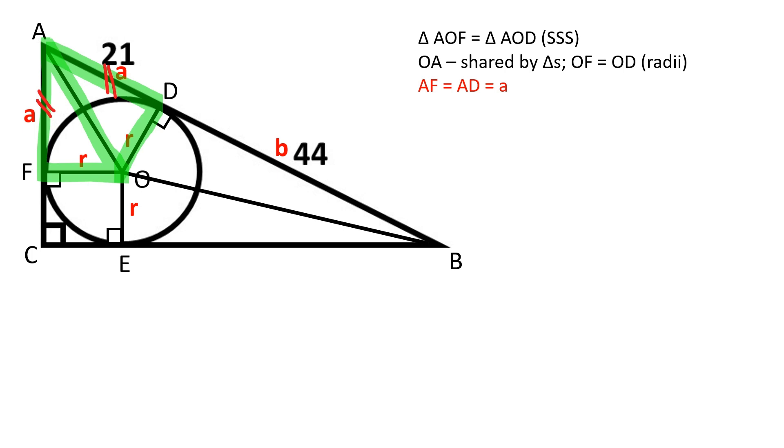AF is equal to AD and equals to A because two tangent segments that are drawn from the same external point are equal.